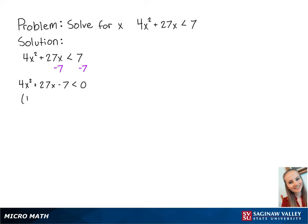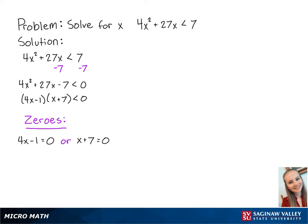Factoring gives us 4x minus 1 times x plus 7, which is less than 0. Now we can find the values of x that make the left side equal to 0 by using the equations 4x minus 1 equals 0 or x plus 7 equals 0. For the first equation, we get x is equal to 1 fourth, and for the second equation, we get x is equal to negative 7.